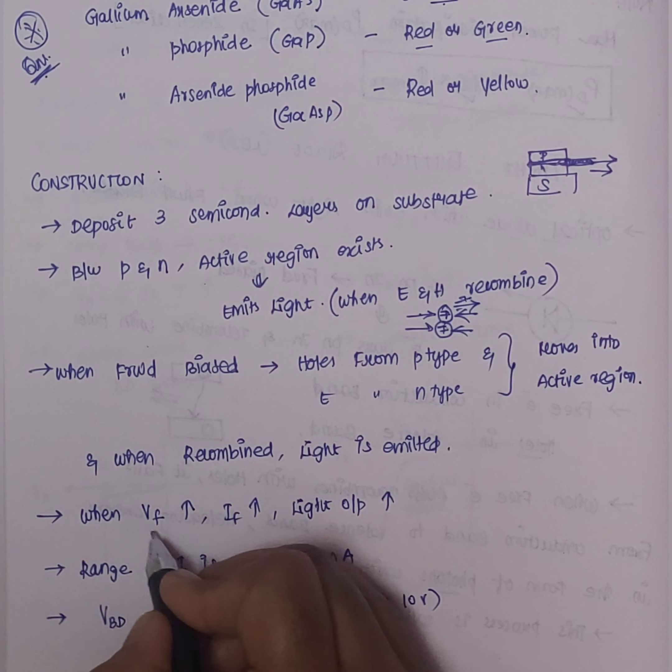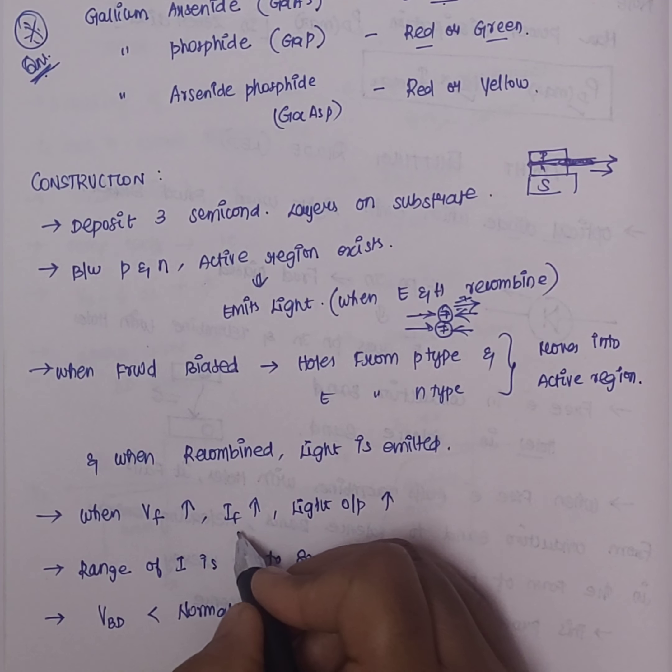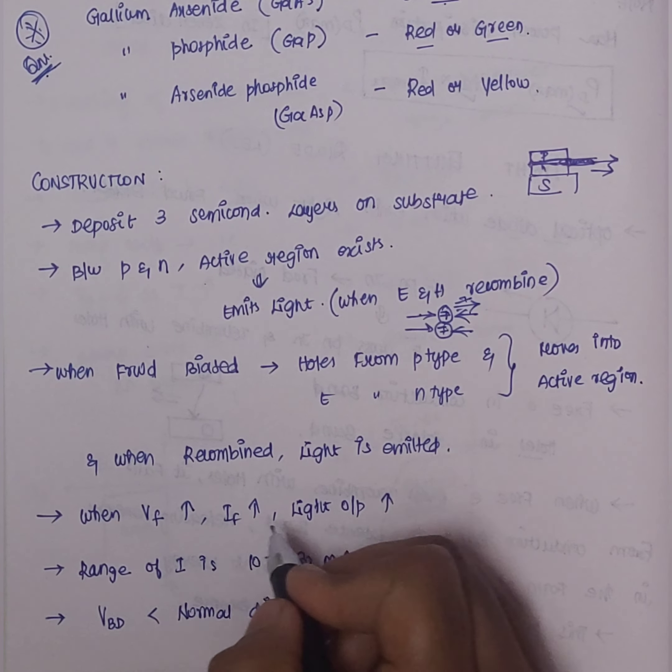If we increase the voltage VF, we increase the current IF, and therefore we increase the output. In this range, we have a current of 80 mA. The breakdown voltage should be less than in a normal diode — we maintain 3V to 10V. If we exceed the current range there will be damage, that's why we use this specification.